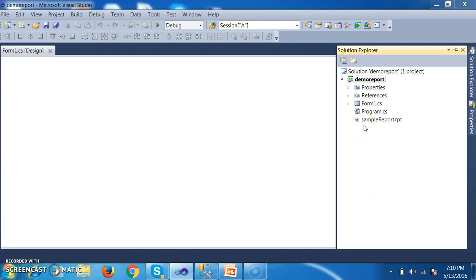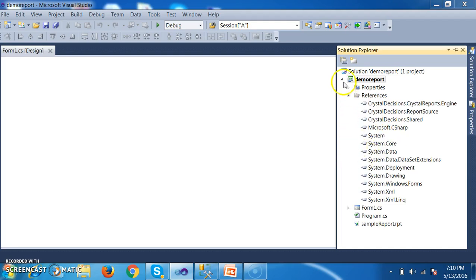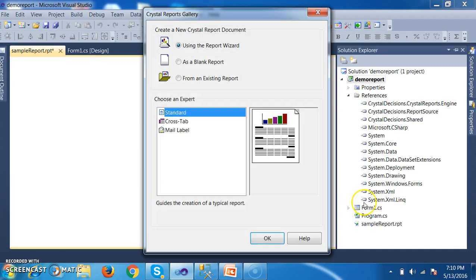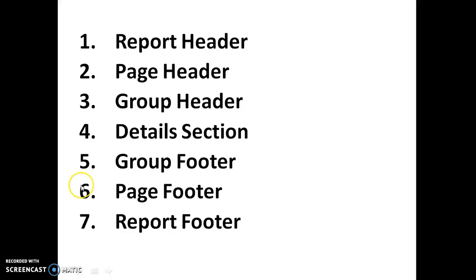Crystal Reports is automatically added within your solution. Generally, Crystal Reports templates have seven sections. One is Report Header, Page Header, Group Header, Detail Section, Group Footer, Page Footer, and Report Footer. The Report Header section is used to display the company name or organization name or the heading on the header of that particular page.